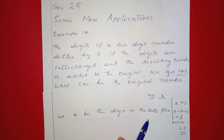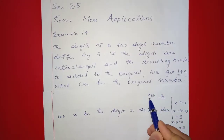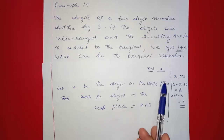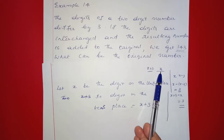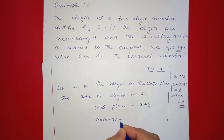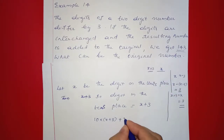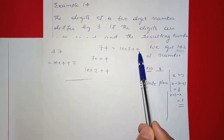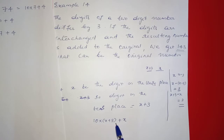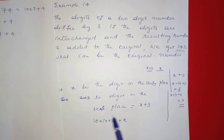Let x be the digit in the units place. If x is the units digit, then the digit in the tens place is x plus 3. The original two-digit number is 10 into (x plus 3) plus x, just like 74 equals 10 into 7 plus 4. So the original number equals 10 into (x plus 3) plus x.